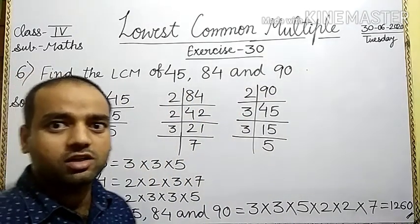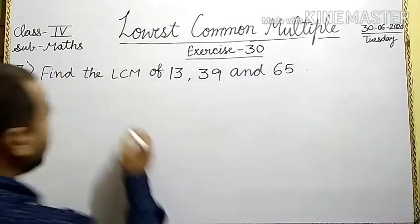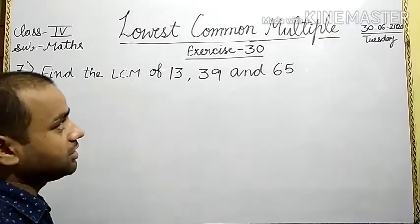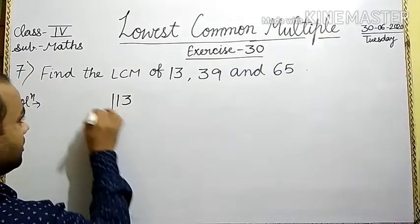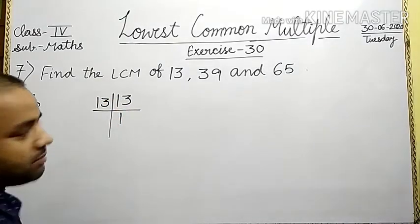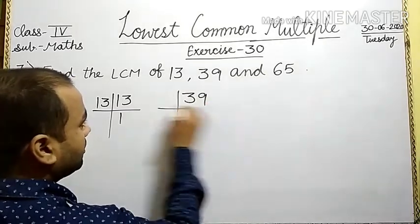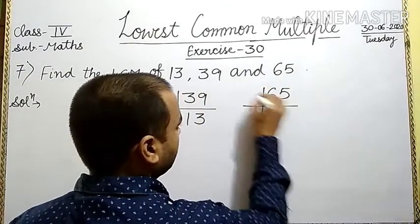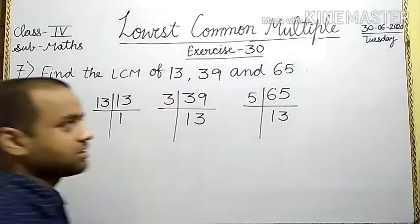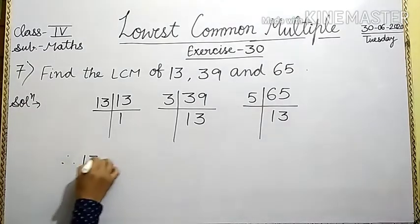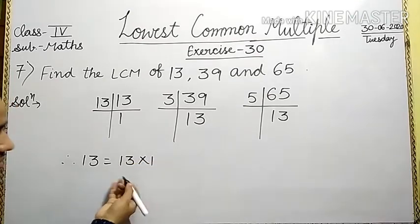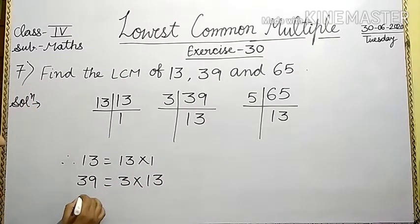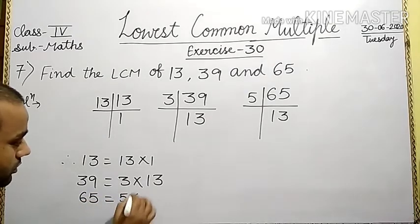Now, let us discuss question number 7. In question number 7, find the LCM of 13, 39 and 65. First, we find the prime factors. For 13: 13 is already a prime number. For 39: 3 times 13. For 65: 5 times 13. Therefore, 13 is equal to 13; 39 is equal to 3 into 13; and 65 is equal to 5 into 13.